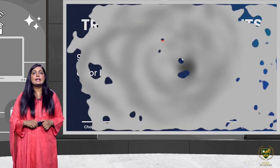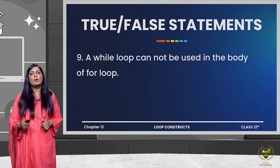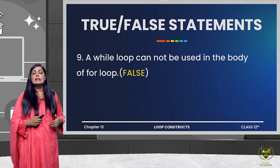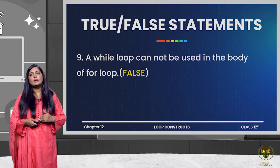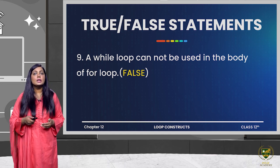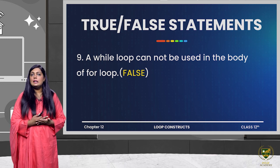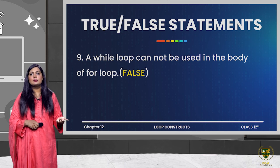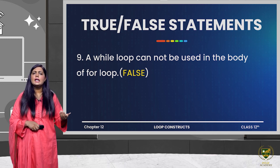The next question: a while loop cannot be used in the body of a for loop — this statement is false, because in any control structure you can use any other control structure without any doubt. We have done this in many examples.